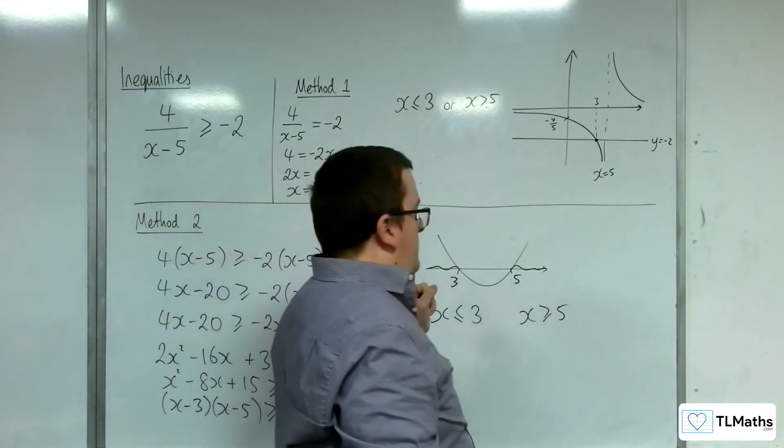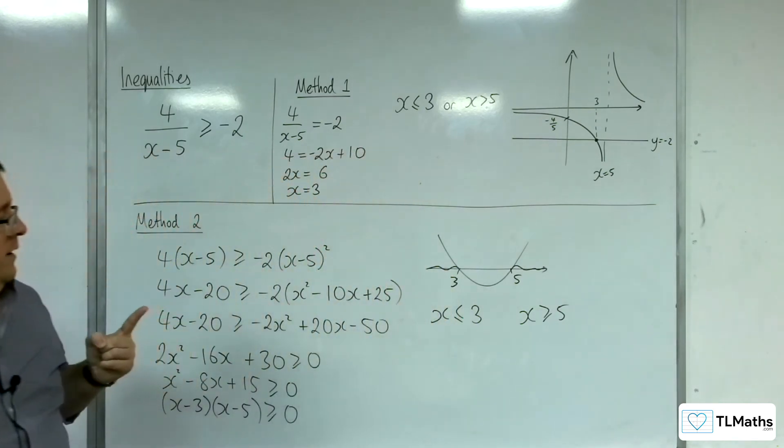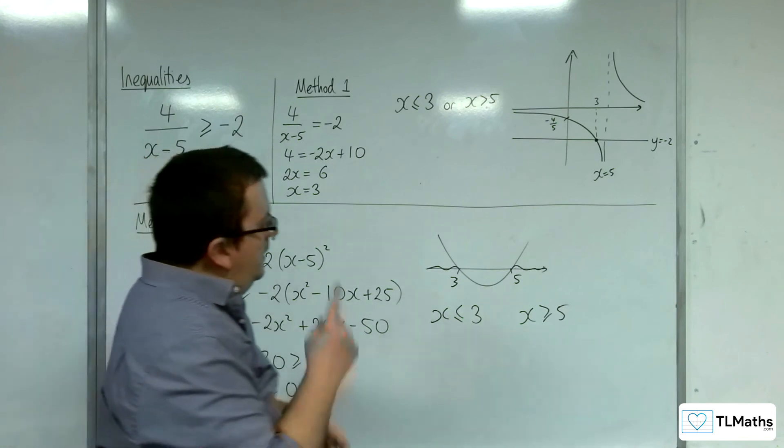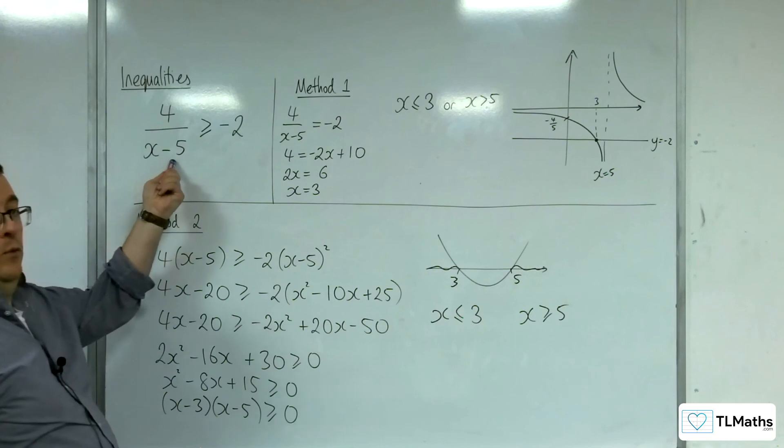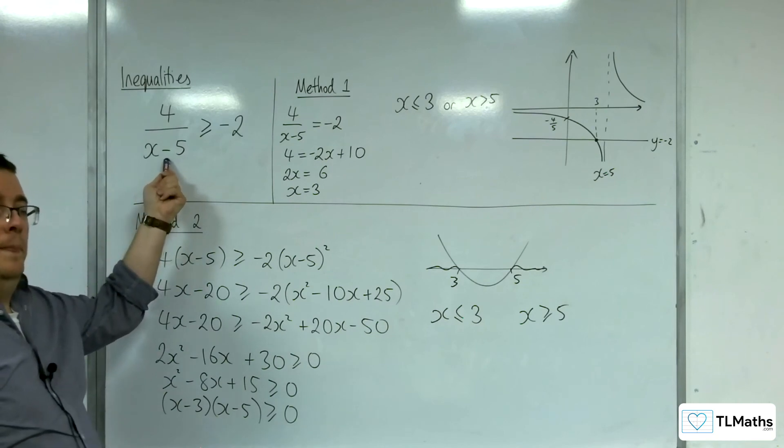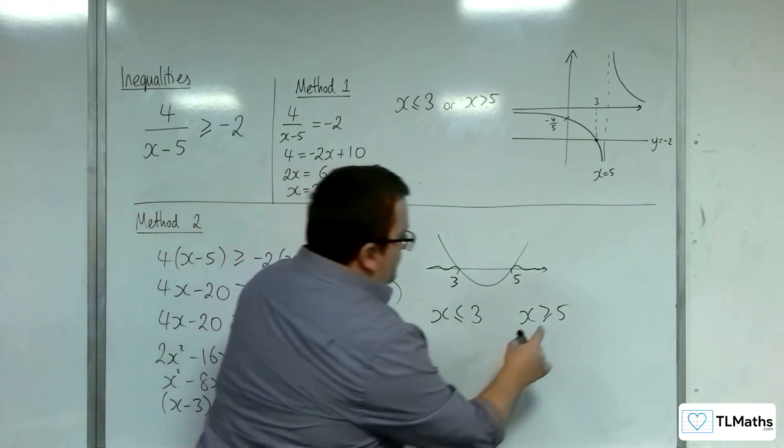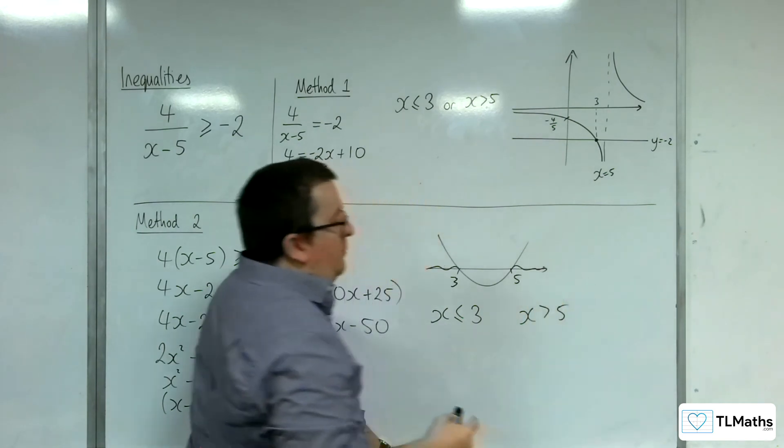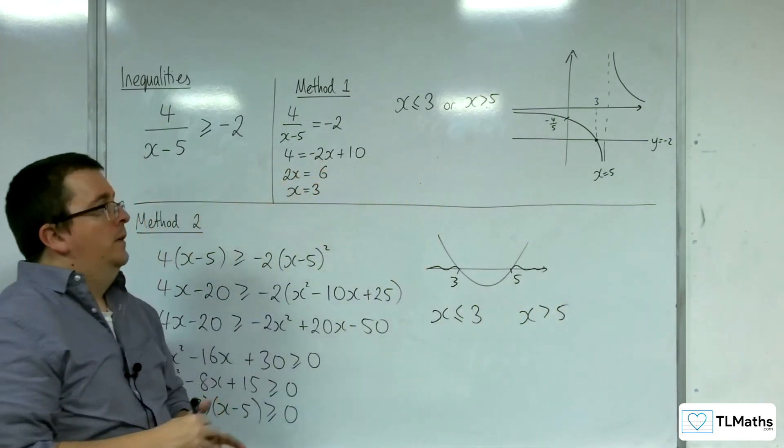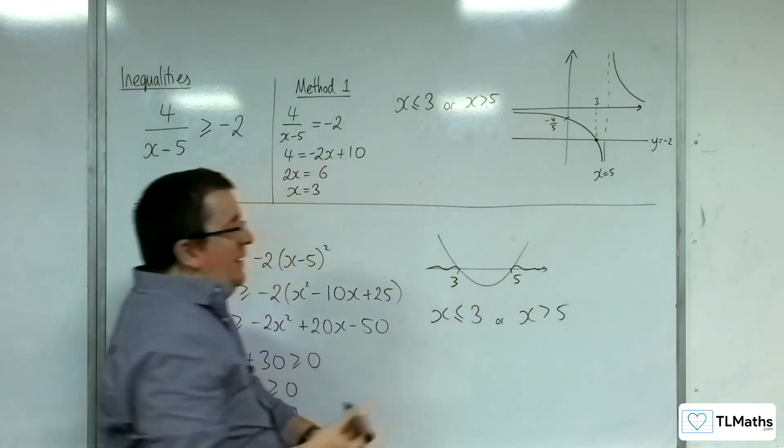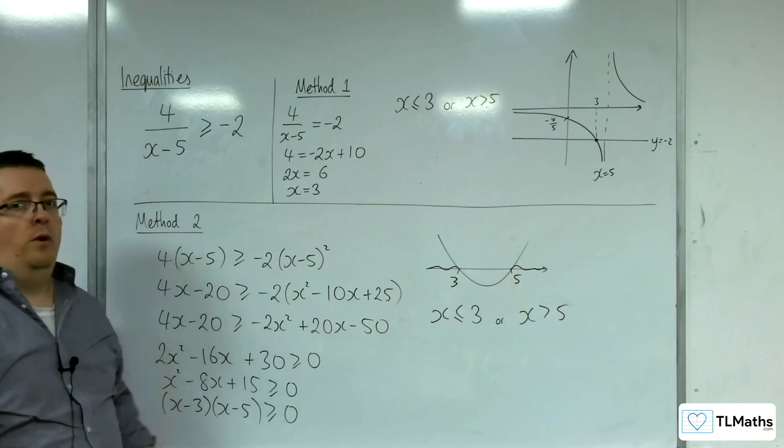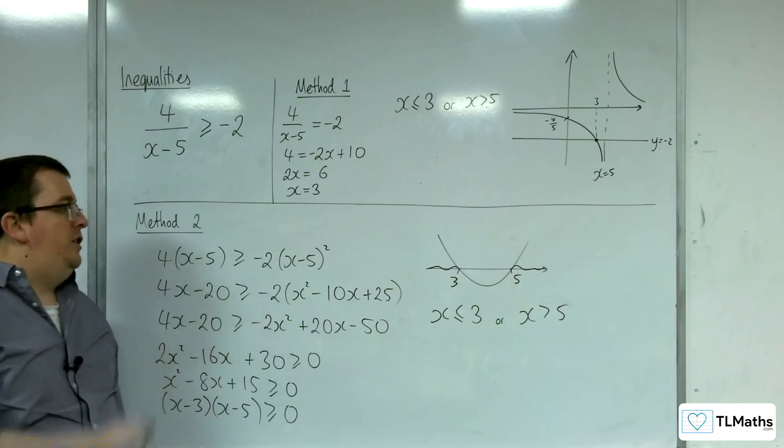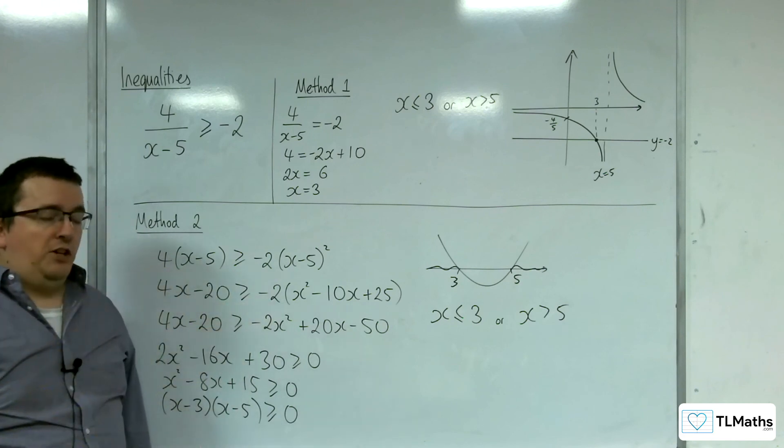This is where you can go wrong using this method. Because x equals 5 can't be part of the solution because x equals 5 causes the denominator to be 0. So x must be greater than 5. Now that's what can very easily catch you out doing a wholly algebraic method where you don't know what's going on behind the scenes. So you do have to be careful with this method too.